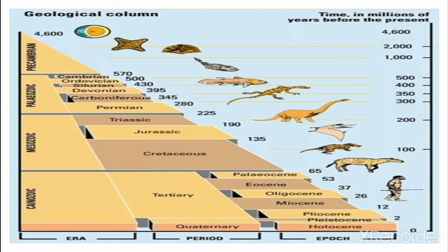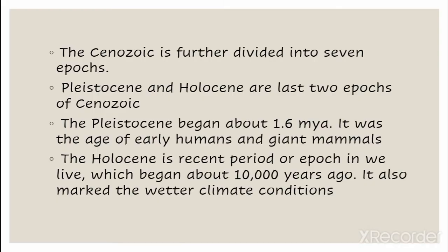The Cenozoic age, formed by combining Tertiary and Quaternary, has seven epochs, and among those seven epochs the last two — Pleistocene and Holocene — become very important for us. Pleistocene began about 1.6 million years ago and it was the age of the early humans and giant mammals. Paleolithic and Mesolithic, which I will explain in further videos, are also very important, so please try to understand this concept.